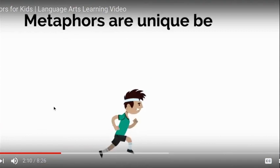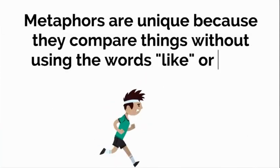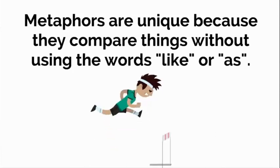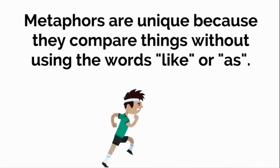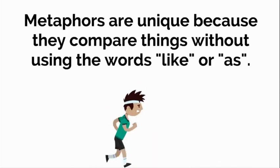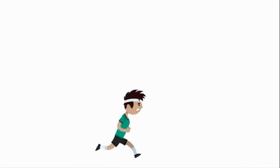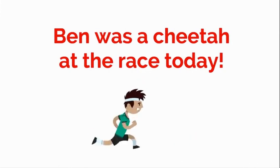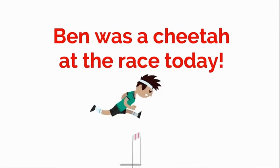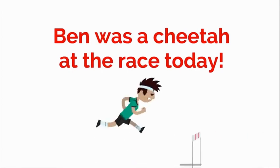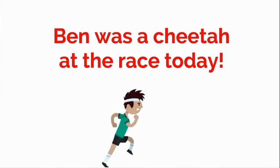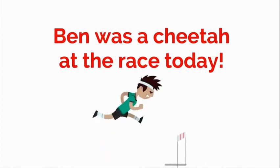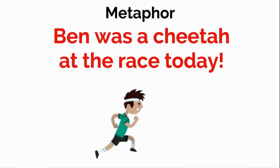Here's an example of a metaphor: they're going to compare this runner here to a cheetah, but you're not going to see the words 'like' or 'as.' They're unique because they're comparing two things, but different from similes because they're not using 'like' or 'as.' So 'Ben was a cheetah at the race today' — that's a metaphor because they're saying Ben is another thing; he is a cheetah. If they said 'Ben was like a cheetah,' then it would turn into a simile. But because they say 'Ben was a cheetah at the race today,' we know that it is a metaphor.